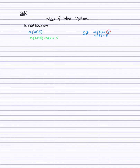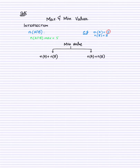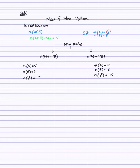So the lesser value of the two sets is the maximum value of intersection — that is the first condition. Now for the minimum value of intersection, we have two cases. To find the minimum value, we add N(A) and N(B). For example: Case 1 — N(A)=5, N(B)=7, N(Universal)=15. Case 2 — N(A)=10, N(B)=8, N(Universal)=50.